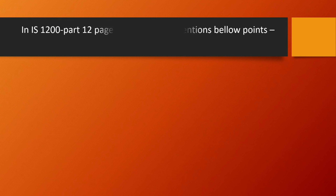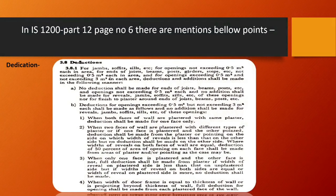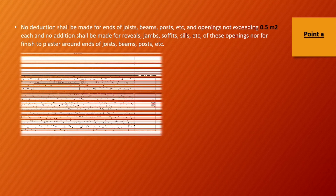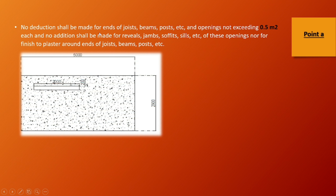Now let's talk about the deductions. In the IS code, you have a full declaration in clause 3.8. I will put it in one point. Point number 1: No reduction shall be made for ends of joist, beam, post, etc., and for openings not exceeding 0.5 square meter each. And no addition shall be made for reveals, jamb, soffit, sill, etc.